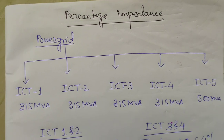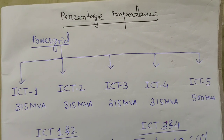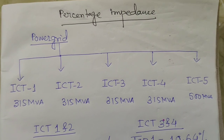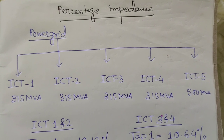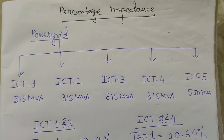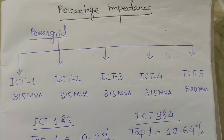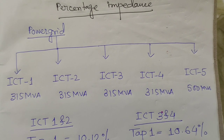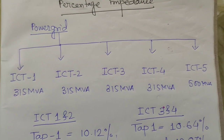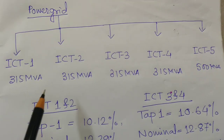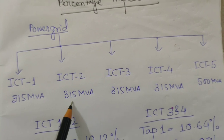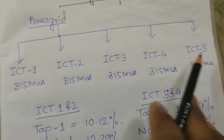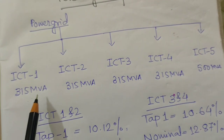Today I'll discuss percentage impedance. Let's start with a power grid substation. A power grid substation has five numbers of ICT interconnected transformers or auto transformers. The five transformers installed at this substation are: the first is 315 MVA, second 315, third 315, fourth 315, and the fifth is 500 MVA.